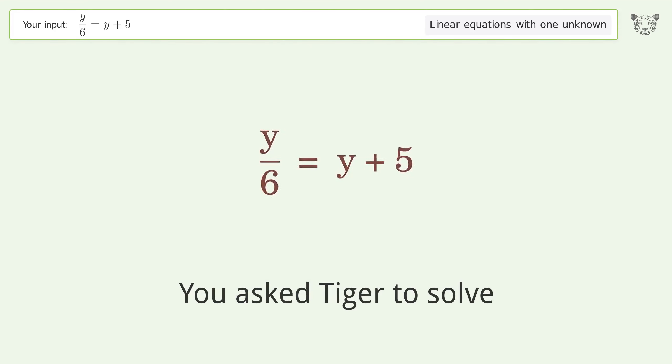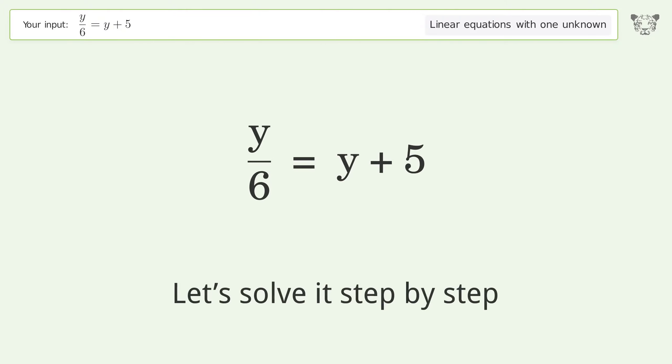You asked Tiger to solve. This deals with linear equations with one unknown. The final result is y equals negative 6. Let's solve it step by step.